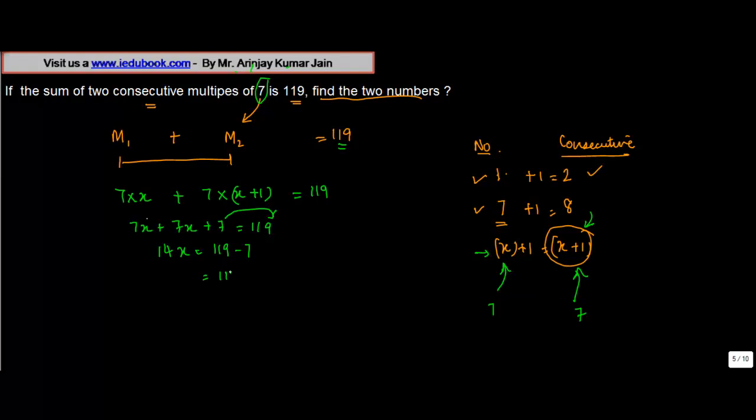We take this to the other side of the equality, it changes sign, which gives us 14x equals 112. In other words, x equals 112 divided by 14, which is 8.